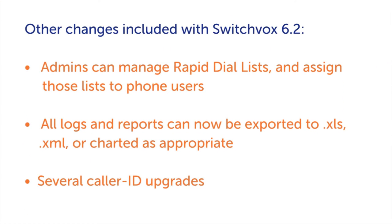Here's a list of the other changes with Switchvox 6.2. Admins can manage rapid dial lists and assign those lists to phone users. All logs and reports can now be exported to XLS, XML, or charted as appropriate, as well as several caller ID upgrades.